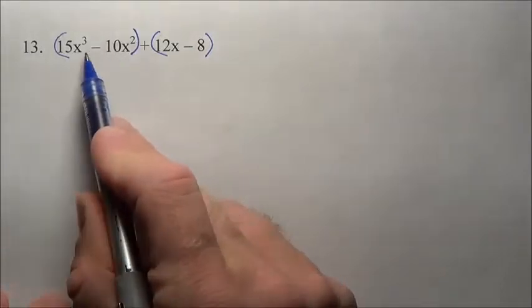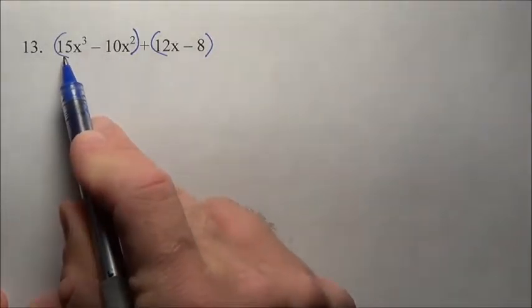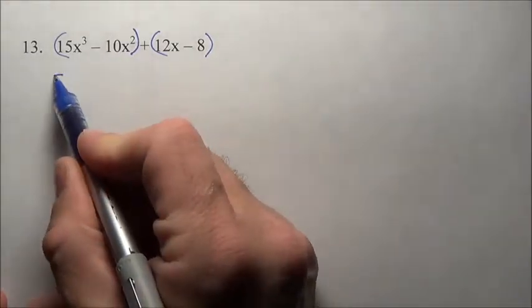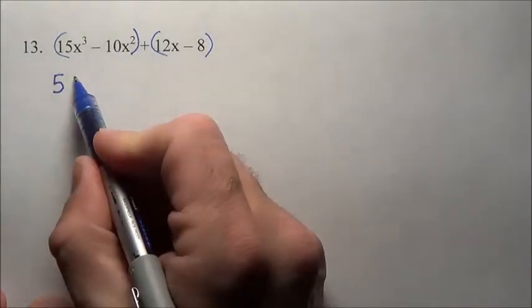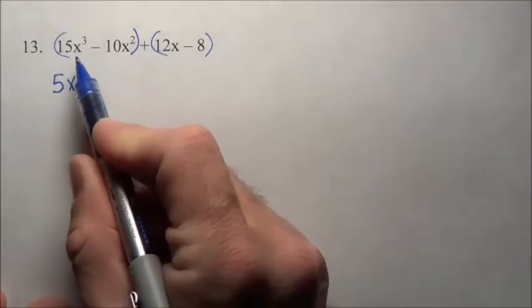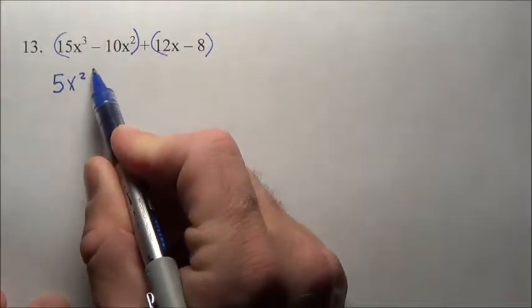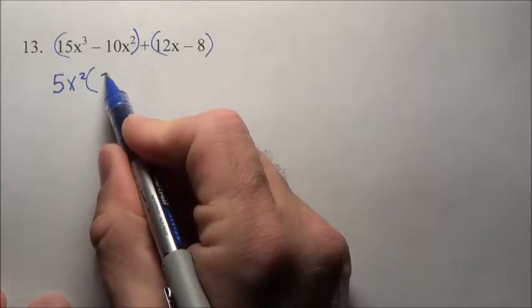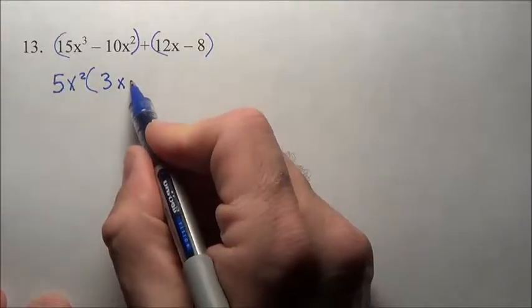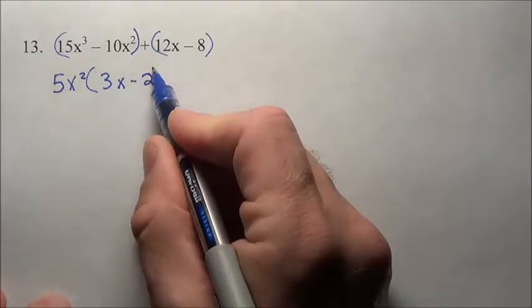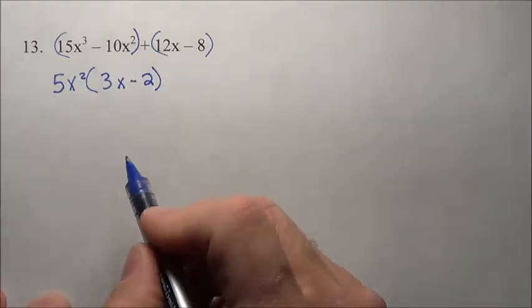Now I want to factor out whatever common factors exist here. 15 and 10, that's a common factor of 5. X cubed, X squared, and X squared. So 5X squared is the most that can be pulled out of these terms. 5X squared times 3X gives me 15X cubed, 5X squared times negative 2 creates 10X squared.